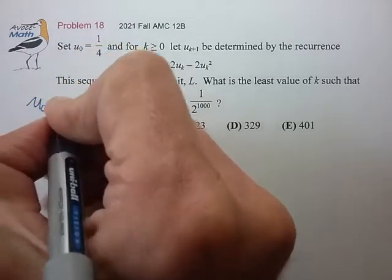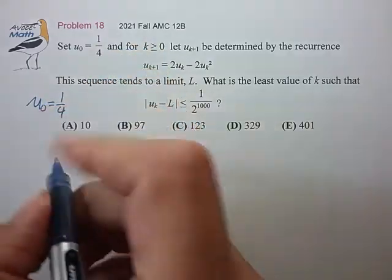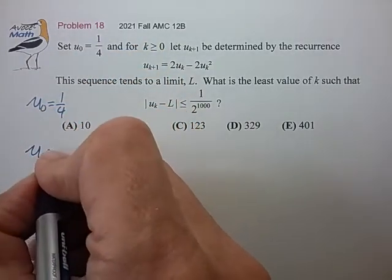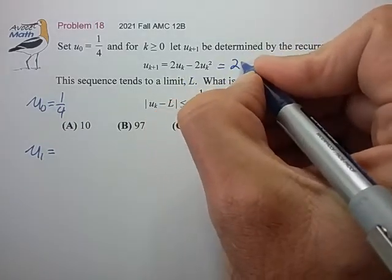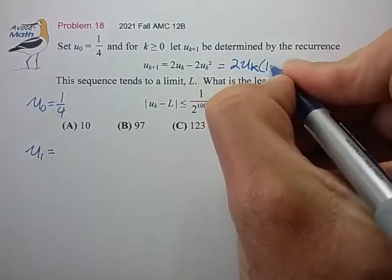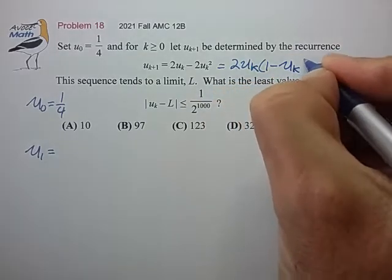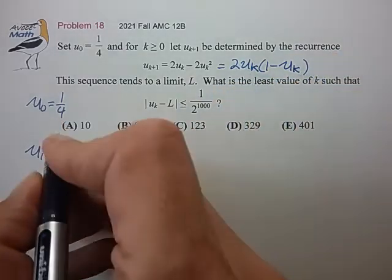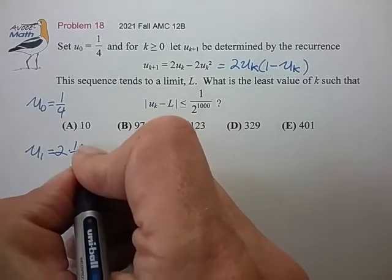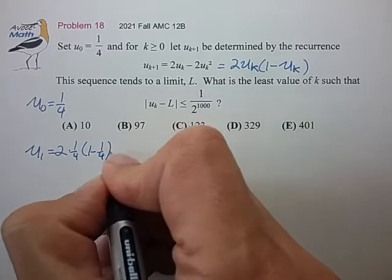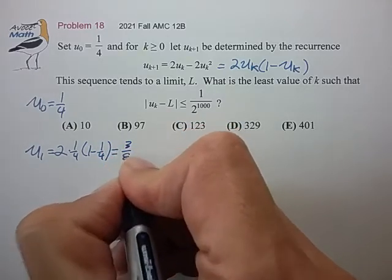So u₀ is 1 quarter. u₁ is equal to, let's write this as 2 times uₖ₋₁ minus uₖ squared. So using this we'll plug the value of u₀, 1 quarter, 1 minus 1 quarter, 3 eighths.